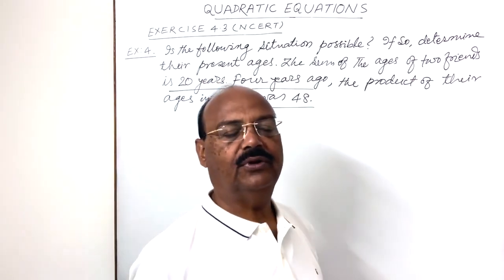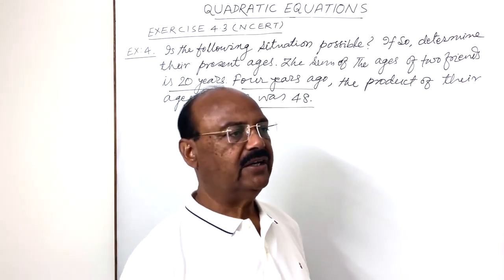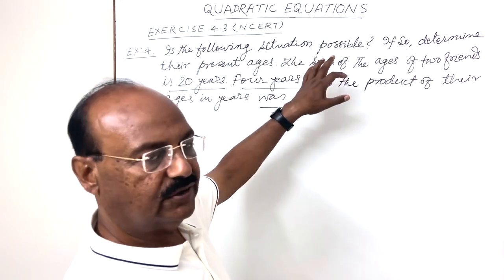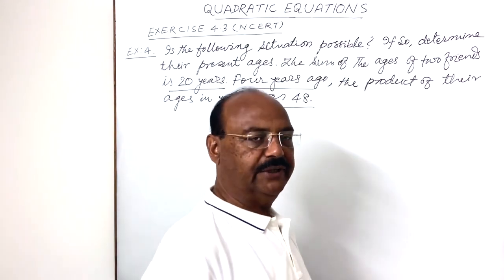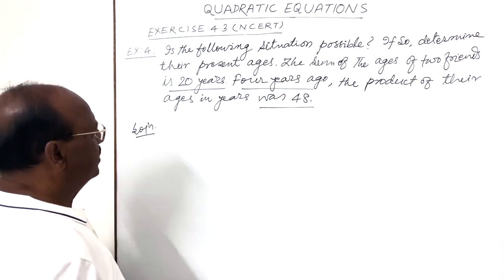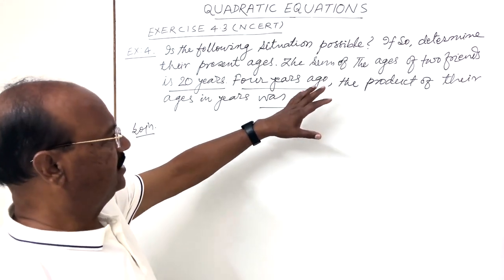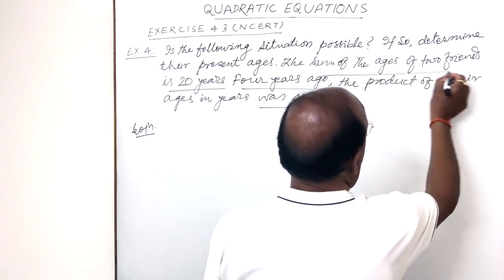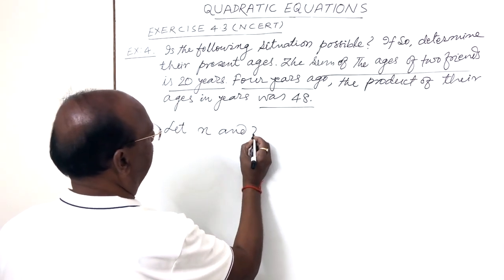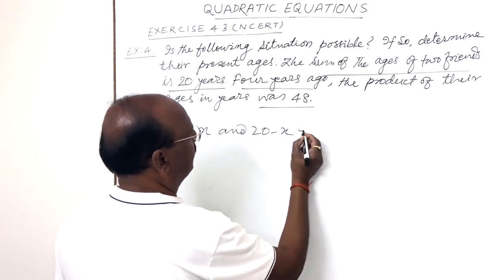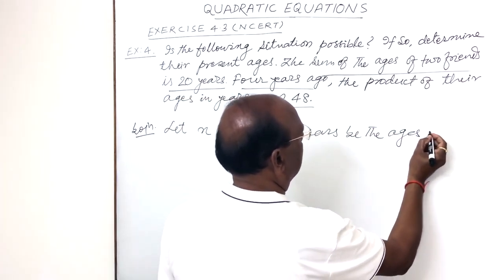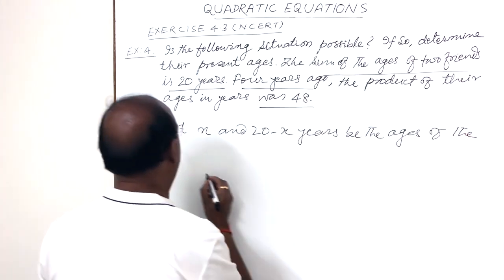First, we need to form a quadratic equation, and after that we will solve it and check whether a solution is possible or not. If a solution is possible, we have to find it. Let x and 20 minus x years be the ages of the two friends.